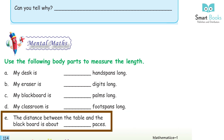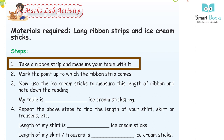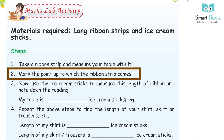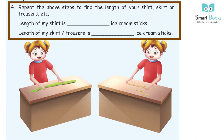The distance between the table and the blackboard is about dash paces. Maths Lab Activity. Materials required: long ribbon strips and ice cream sticks. Steps: Take a ribbon strip and measure your table with it. Mark the point up to which the ribbon strip comes. Use ice cream sticks to measure this length of ribbon and note the reading — my table is dash ice cream sticks long. Repeat to find the length of your shirt, skirt, or trousers. Length of my shirt is dash ice cream sticks. Length of my skirt or trousers is dash ice cream sticks.